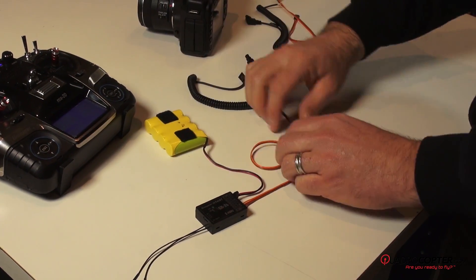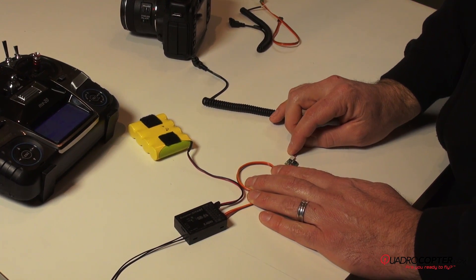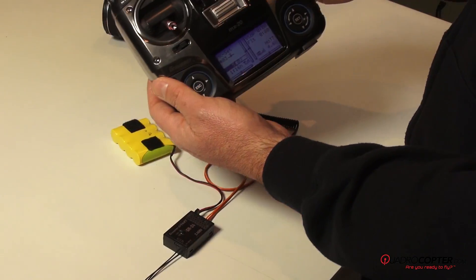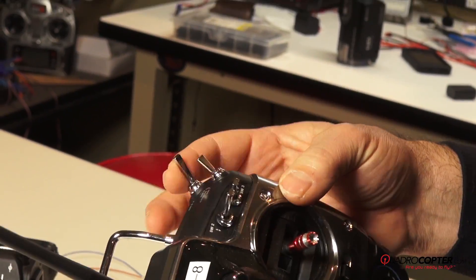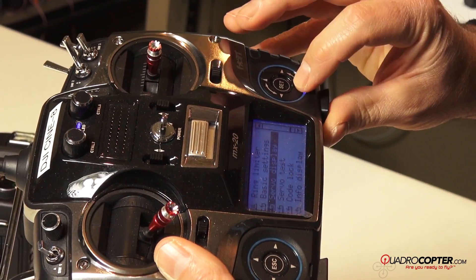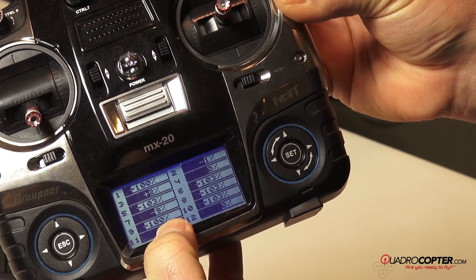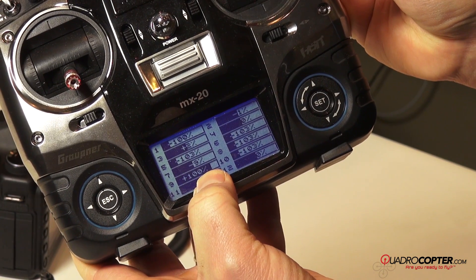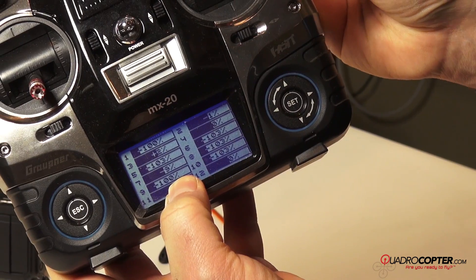So now what we want to do is program the RC Flysoft for single and continuous shooting of the 5D Mark II. So once again, the MX-20, I'm using this switch. This is a spring-loaded toggle switch. And if we go into our servo display, there's channel 9. As we hit the switch, it's at minus 100 off, plus 100 to trigger the switch, and back to minus 100.